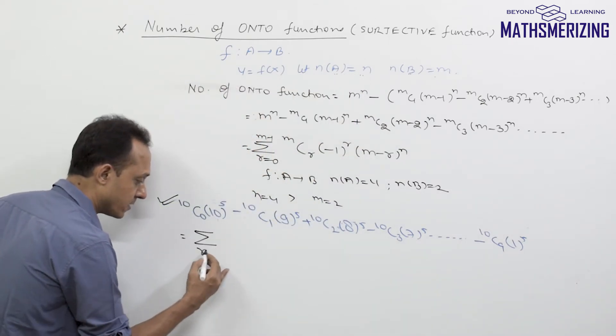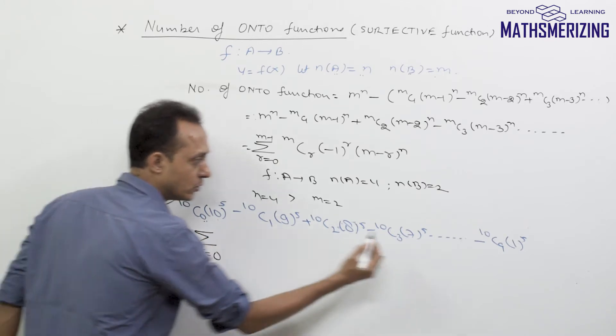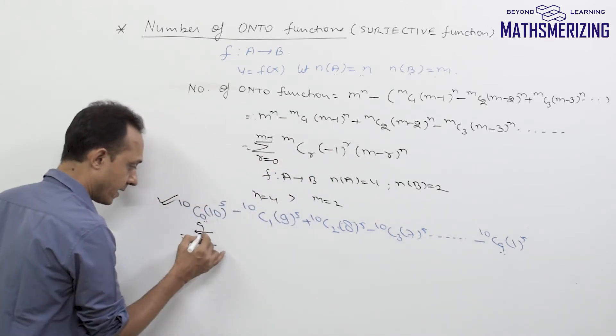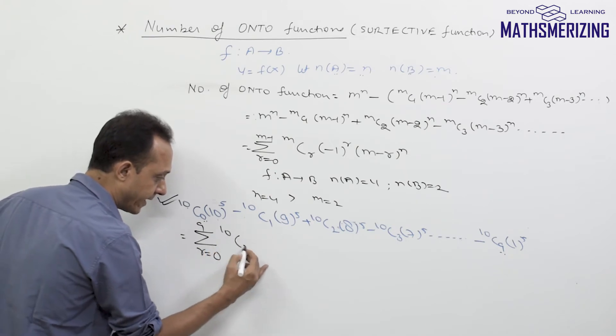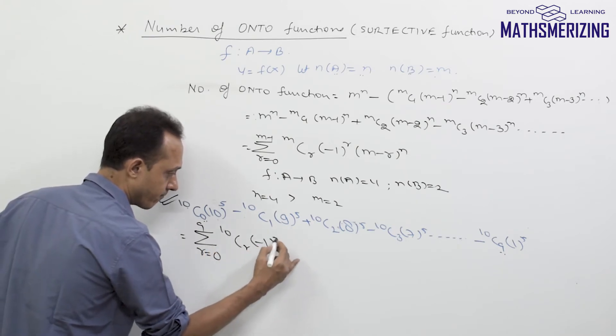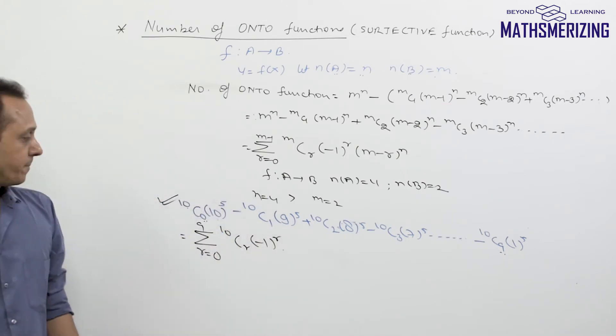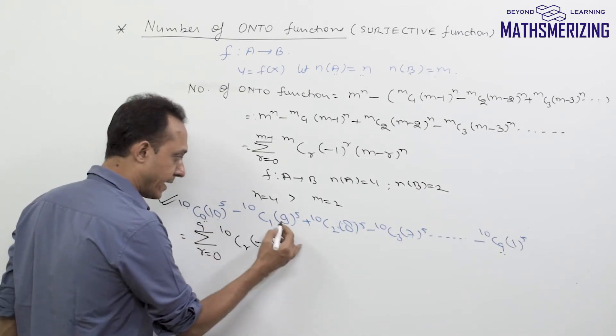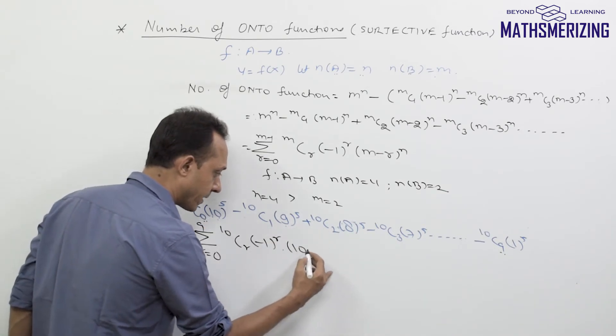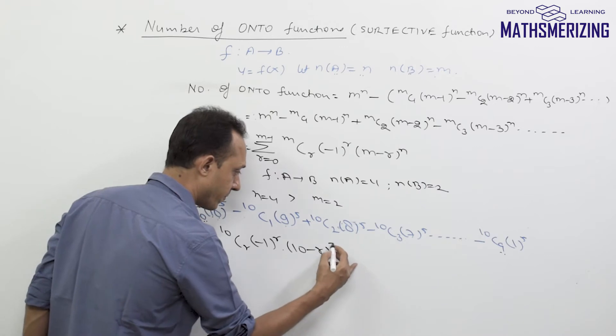I can write it as summation where r varies from 0 to 9, then it is 10Cr·(-1)^r·(10-r)^5.